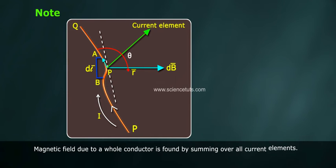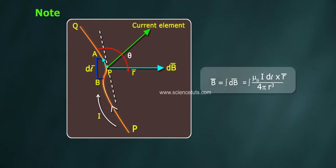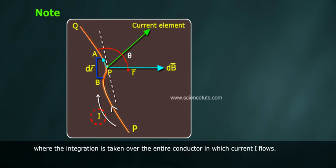Magnetic field due to a whole conductor is found by summing over all current elements. B bar equals integration of dB bar equals integration of mu0 I DL cross R bar by 4 pi R cube, where the integration is taken over the entire conductor in which current I flows.